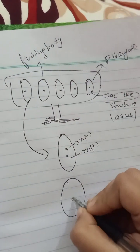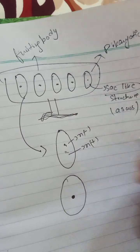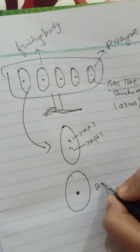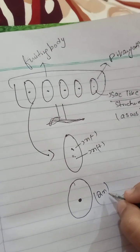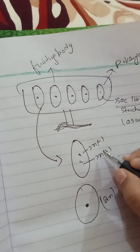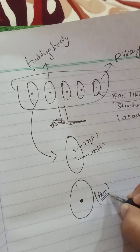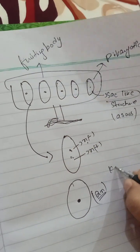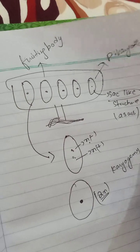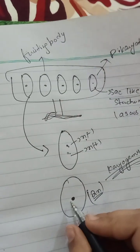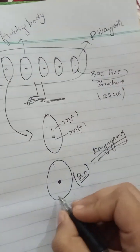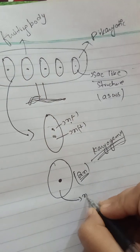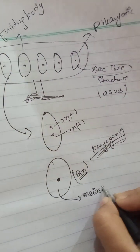When the male and female gametes fuse together, they make a 2n diploid nucleus. This fusion of the n and n nuclei makes the 2n, and this is called karyogamy — when the nuclei of both gametes fuse together. After karyogamy, meiosis will occur inside the ascus.